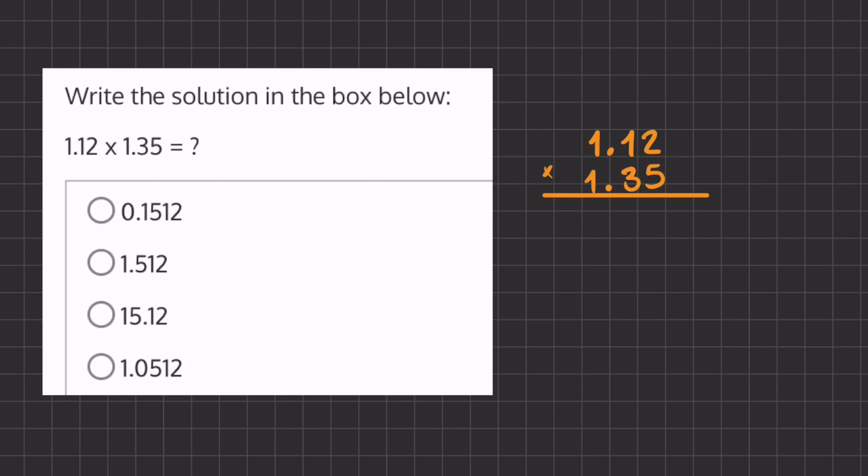Alright, so in this problem we are multiplying two decimals by one another. So we're going to use long multiplication, and when we multiply decimals we're going to ignore them currently and we're going to get back to them at the end of our problem.